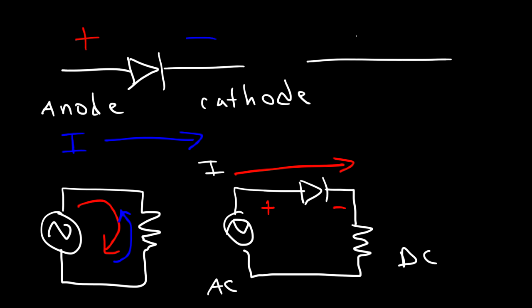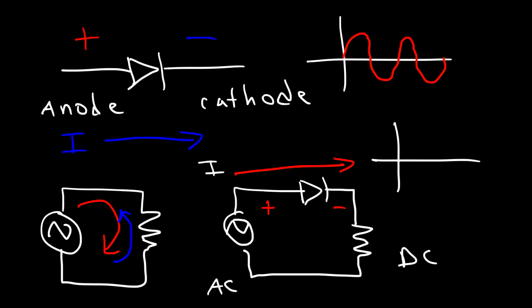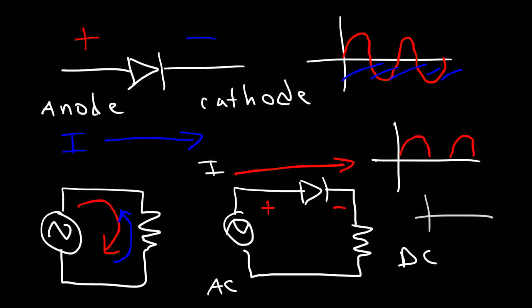If you draw the graph for the AC sine wave, the diode is going to take out half of the graph — this part disappears. So you have basically DC current, but it's not completely rectified — it's a variable DC current. You may need to add other circuit elements if you want a pure DC current. But diodes are used to rectify an AC current into a DC current.